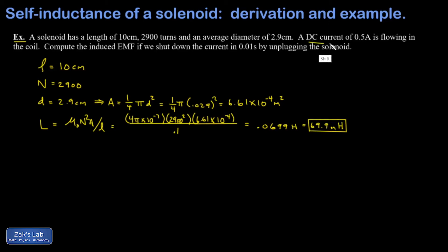Next, we're told that this coil had a DC current of half an amp flowing through it, and we're trying to compute the induced EMF if we shut the current down in one hundredth of a second by unplugging the solenoid. In this case, we're talking about the EMF that's induced to attempt to keep the current flowing in the coil.